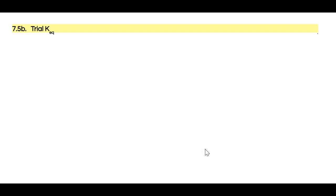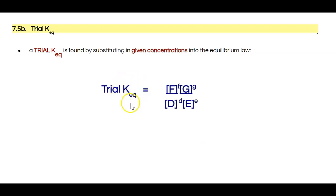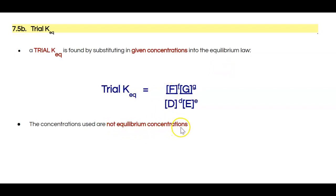So what is trial K? Trial K is found by substituting given concentrations into the equilibrium law. Typically when we look at the equilibrium law, we're talking about our K_EQ — our equilibrium constant — being equal to the equilibrium concentrations of products divided by those of reactants, raised to the power of their coefficients. When we perform a calculation that involves trial K, we substitute in given concentrations, not necessarily equilibrium concentrations, and that will allow us to ascertain the position of the equilibrium with those given concentrations.